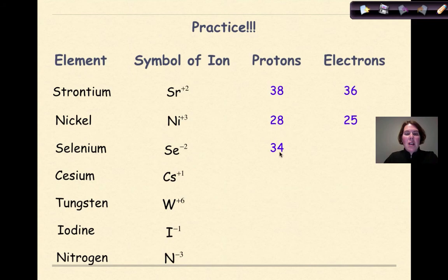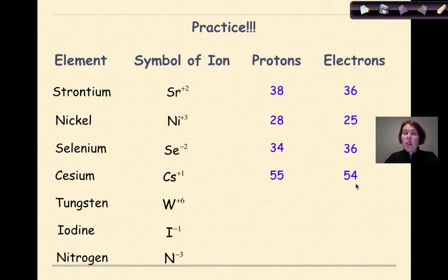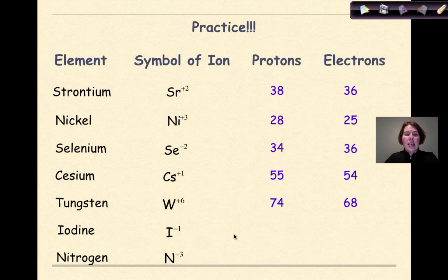Selenium (Se) with a minus 2 charge: 34 protons, 36 electrons — more electrons than protons, difference is 2, so the charge is negative 2. Cesium: 55 protons, plus 1, so 54 electrons. Tungsten (W) is plus 6: 74 protons, therefore 68 electrons, because the difference between 74 and 68 is 6. Iodine: 53 protons, minus 1 charge, therefore 54 electrons.